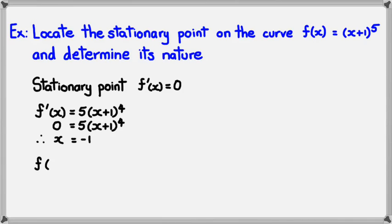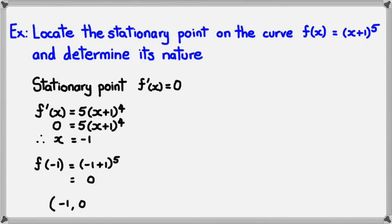From this point onwards, we calculate f(−1) to find the point itself. f(−1) is actually equal to 0. So the point we're working with is (−1, 0). But now we need to determine its nature.